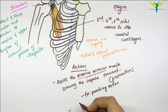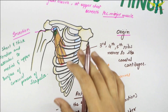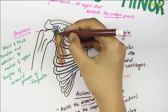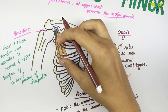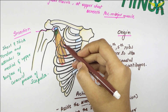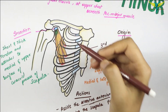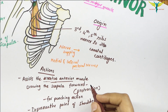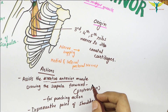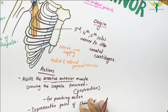The pectoralis minor also helps in the depression of the point of the shoulder. As you can note, the fibers run in this direction, and the contraction of this muscle leads to the depression of the shoulder joint. The pectoralis minor also acts as an accessory muscle for respiration during the process of forced inspiration.